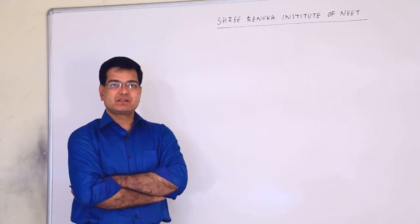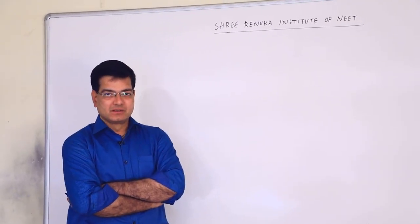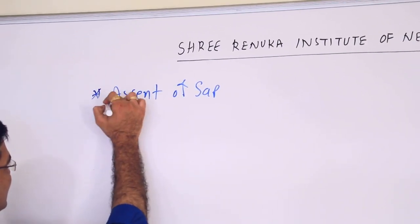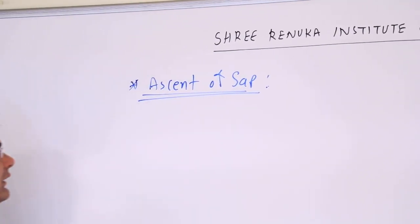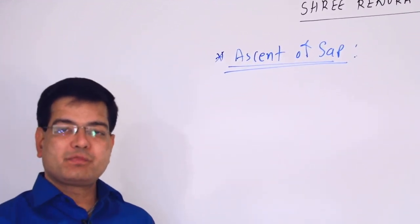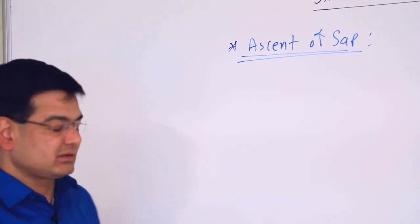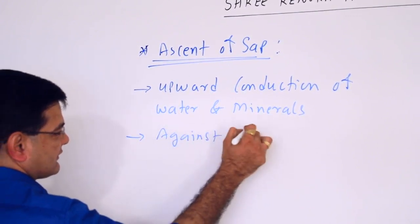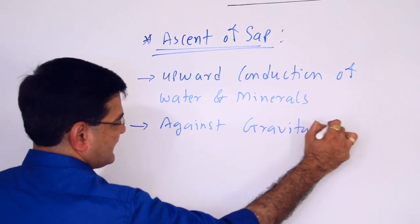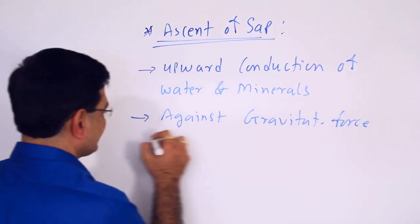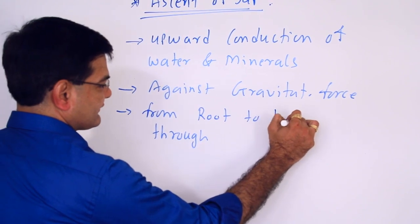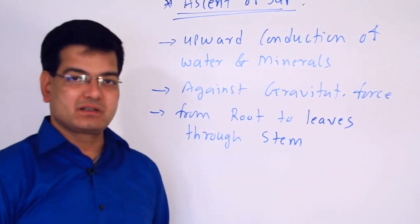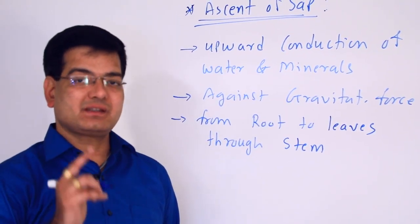Welcome all of you to Renuka Institute of NEET. Today our topic is ascent of sap. Ascent of sap is upward conduction of water and minerals against gravitational force from root to leaves through the stem. This upward conduction of water and minerals occurs through the xylem.